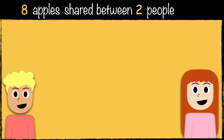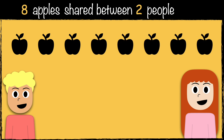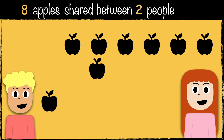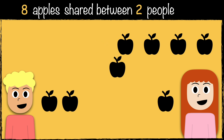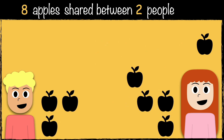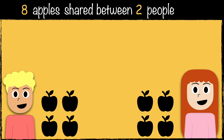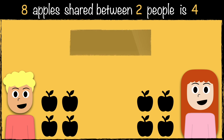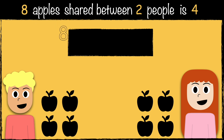Here's another example. Two friends are sharing eight apples. How many apples will each child get? Let's start by giving them one each. We still have some left over, so let's keep sharing. Each child got four apples. So when we share eight apples between two people, each person gets four. This is how we write it as a calculation: eight divided by two equals four.